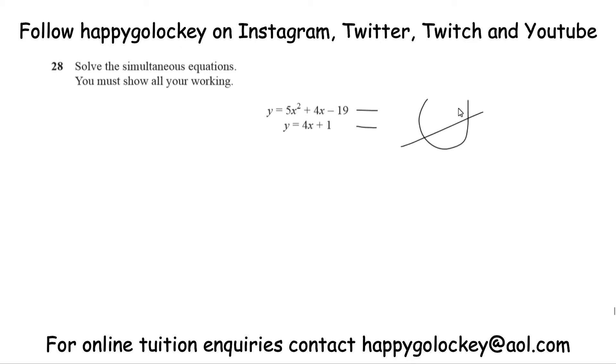So wherever they cross, you're going to have one, two points of intersection, which means we're going to have two lots of x and two lots of y. Alright, so looking at the question then, the one clue we've got to help us is they both start with y equals y equals. So if they're both the same, then 5x squared plus 4x minus 19 equals 4x plus 1.